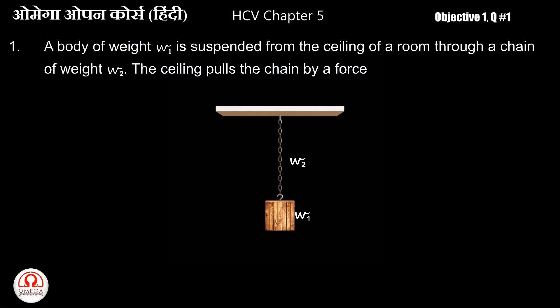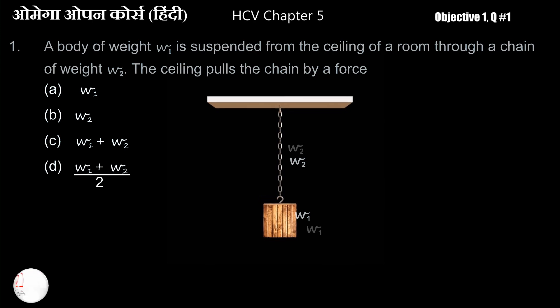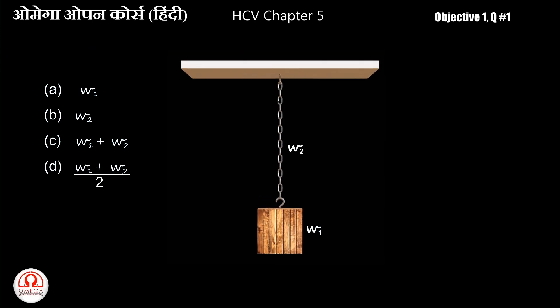A body of weight W1 is suspended from the ceiling of a room through a chain of weight W2. The ceiling pulls the chain by force: A) W1, B) W2, C) W1 plus W2, D) W1 plus W2 by 2.